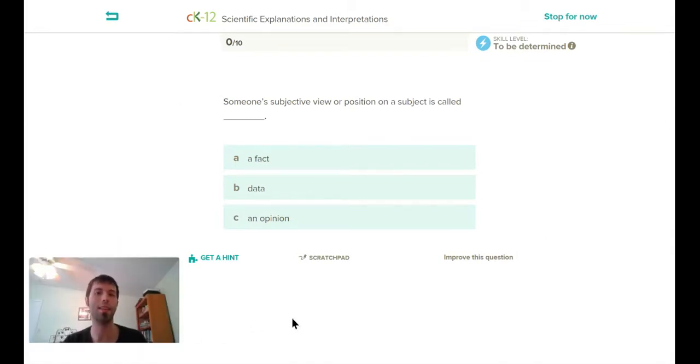The cool thing about CK12 practice is that this is called adaptive practice. Adaptive practice means that everyone gets a different set of questions. Even if you're doing this with a friend, you guys might have different sets of questions. That's not to keep you from cheating, it's to help you gauge your knowledge. This question says someone's subjective view or position on a subject is called what. I know this is called an opinion, but I'm gonna click on data.